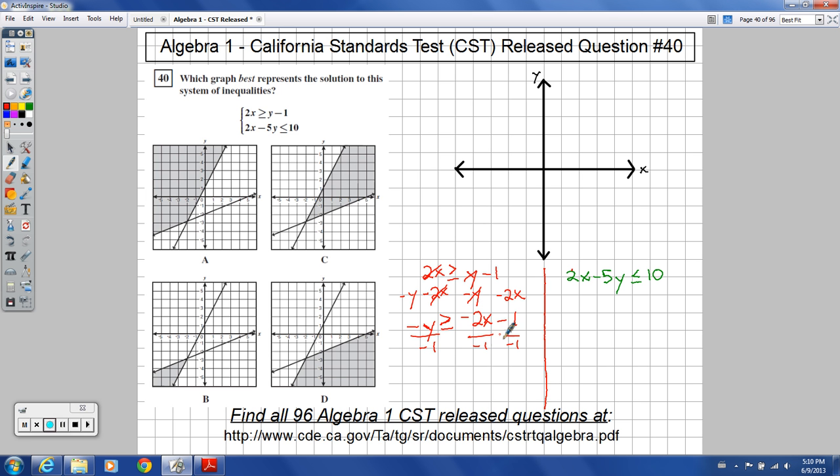If I divide by a negative, though, or multiply by a negative, that's the only time when I need to switch this sign. And so this would become y is less than or equal to 2x plus 1.